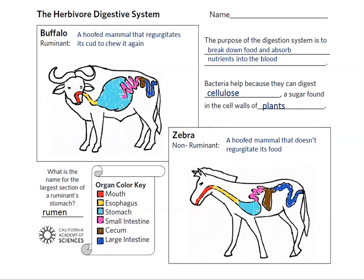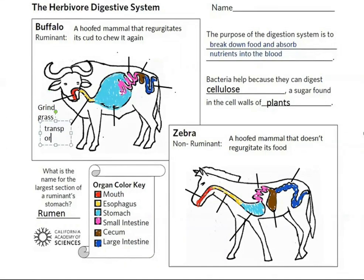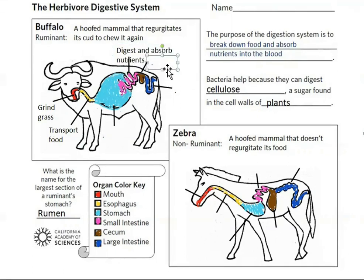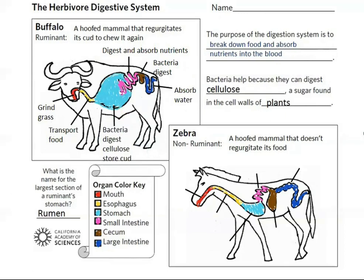In the buffalo's rumen, bacteria break down cellulose, while certain enzymes break down proteins in the zebra's stomach. Most nutrients are absorbed into the blood and then into the body cells in the small intestine, while the majority of water from food is absorbed in the large intestine. Both buffalo and zebra possess a bacteria-rich pouch called the cecum, which connects the small and large intestine and also contains bacteria that break down plant matter.